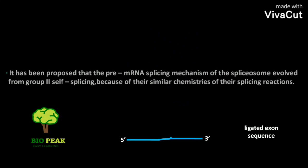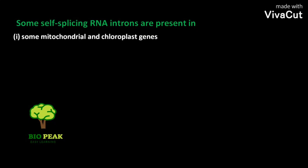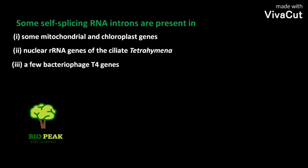It has been proposed that the pre-mRNA splicing mechanism of the spliceosome evolved from the group 2 self-splicing because of their similar chemistries of their splicing reactions. Some self-splicing RNA introns are present in some mitochondrial and chloroplast genes, nuclear rRNA genes of the ciliate Tetrahymena, and a few bacteriophage T4 genes.